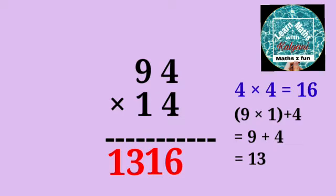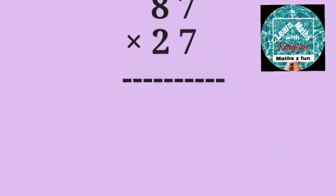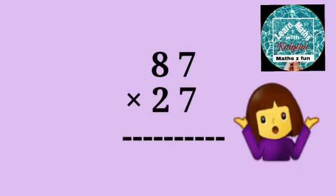is 1,316. Now find 87 by 27. What's the answer?